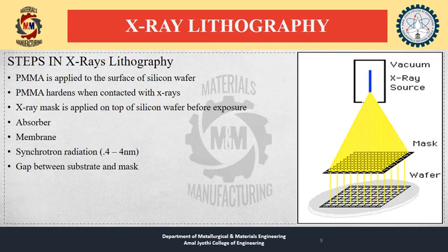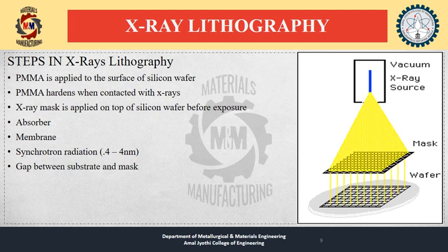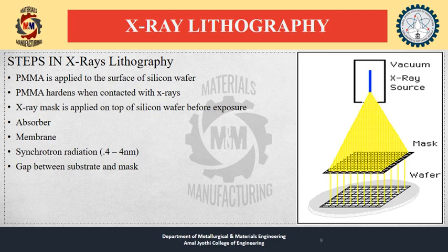In X-ray lithography, X-rays illuminate a mask placed in the proximity of a resist-coated buffer. The X-rays are broadband, typically from a synchrotron radiation source, allowing rapid exposure. The mask consists of an X-ray-absorbent material — typically gold or tungsten — on a membrane transparent to X-rays, typically silicon carbide or diamond. The pattern on the mask is written by direct electron beam lithography onto a resist developed by conventional semiconductor process. The membrane can be stretched for overall accuracy.